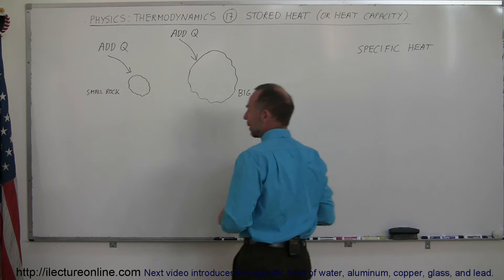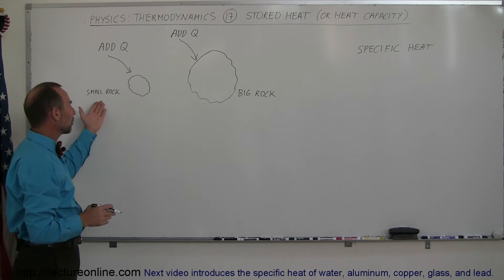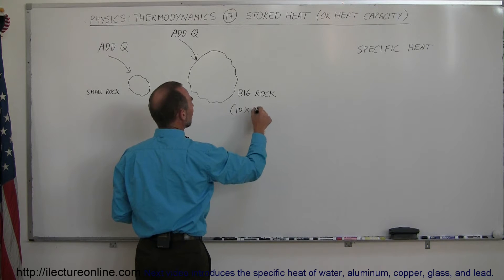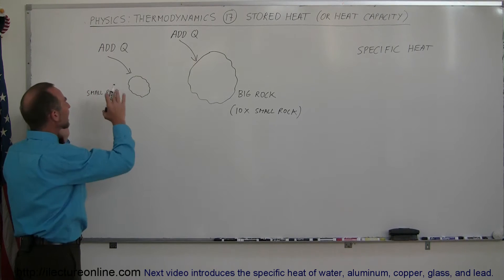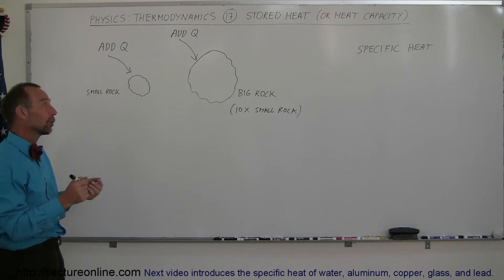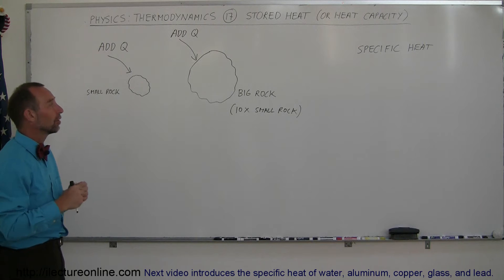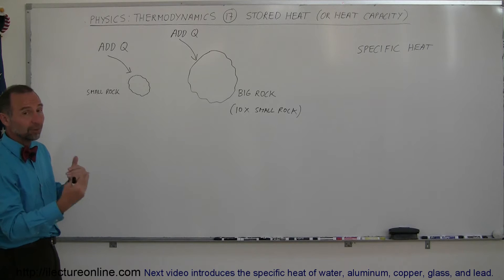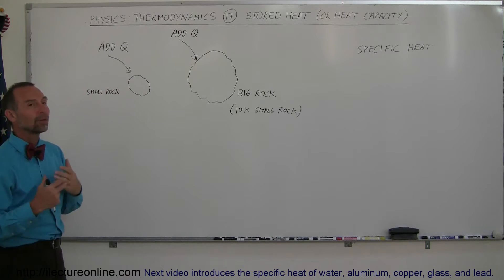Let's look at our example. Let's say we have two rocks made out of the exact same material — a small rock and a big rock, where the big rock is ten times as big as the small rock. We add the same amount of heat to both rocks. We don't know the specific heat, meaning we don't know how much heat is needed to raise the temperature by one centigrade degree, but since they're made of the same material they have the same specific heat.